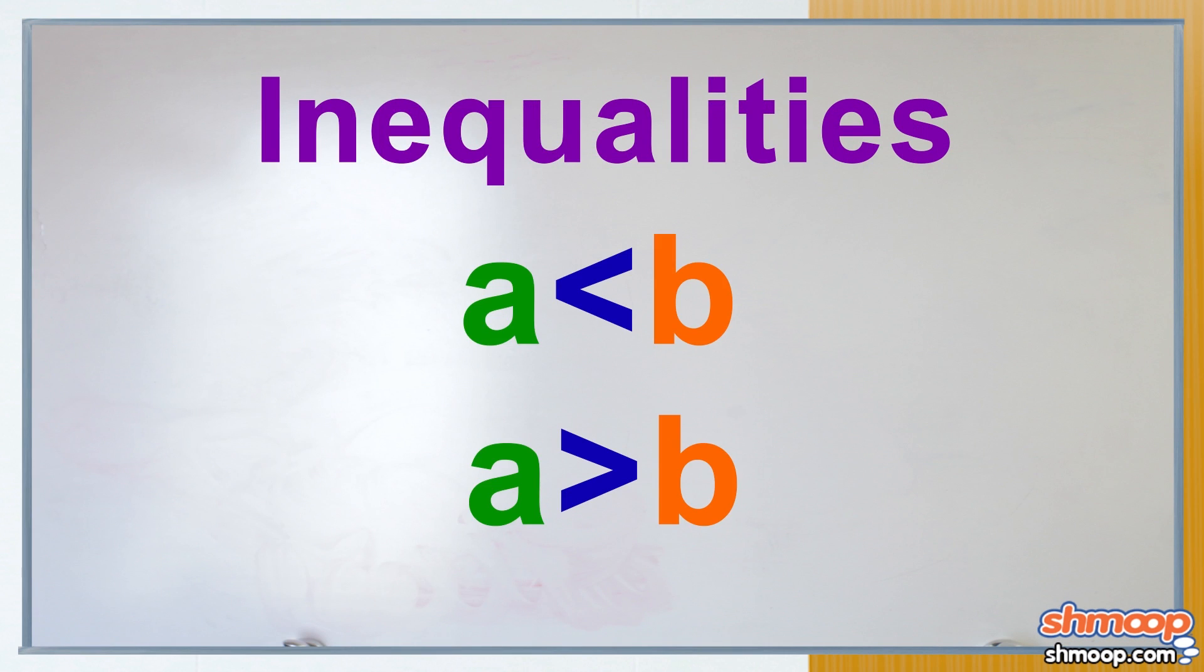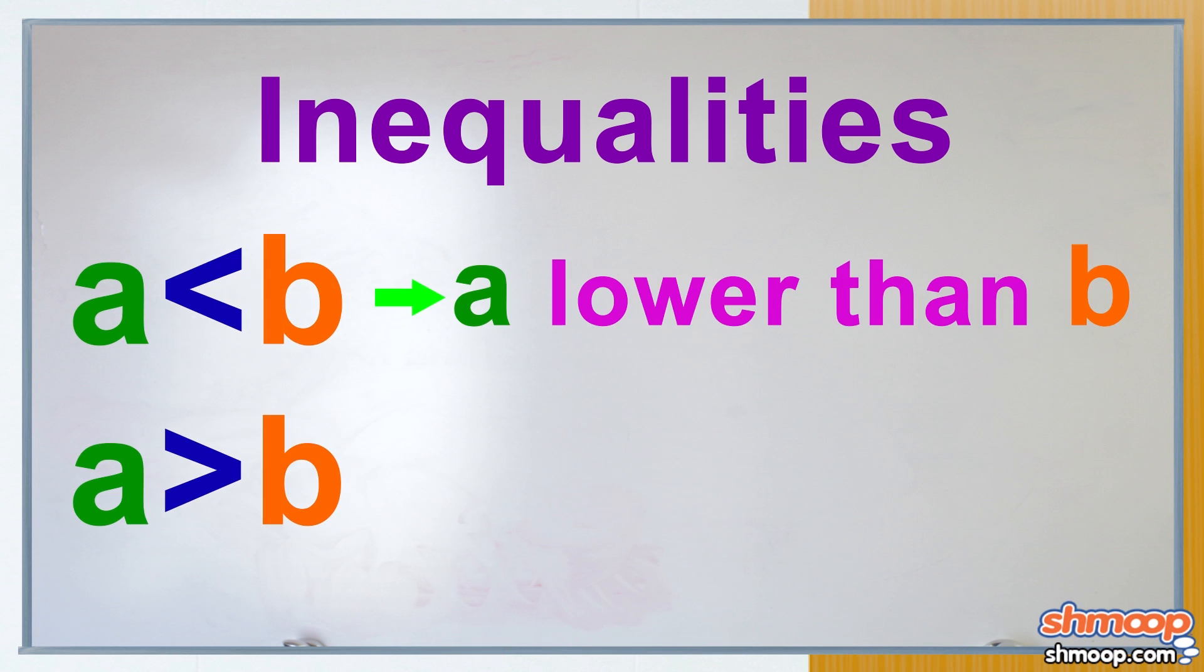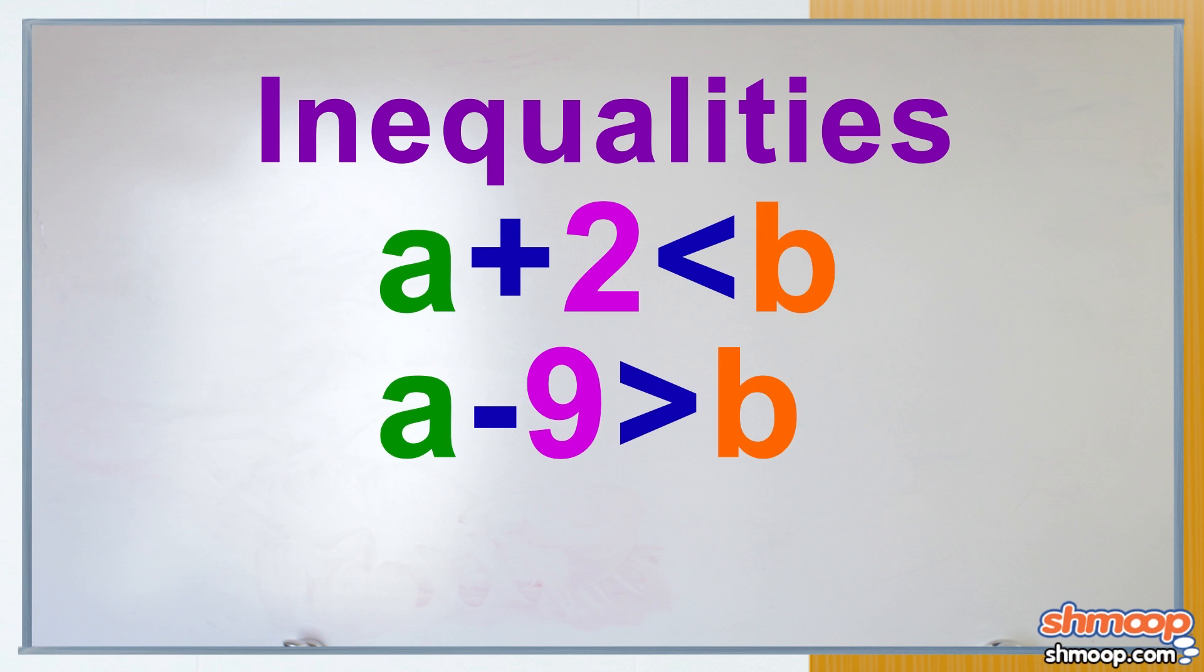If you have a strict inequality, one of these guys, then the value of one side will be everything higher than the other. Like this, and this, and this.